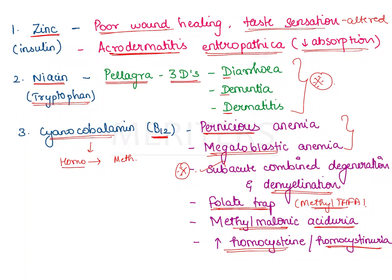Additionally, methylmalonyl-CoA accumulates and gets excreted in the urine — methylmalonic aciduria — because its conversion to succinyl-CoA does not occur in B12 deficiency. Increased homocysteine levels or homocystinuria are also seen, since B12 is essential for converting homocysteine into methionine. If B12 is deficient, homocysteine accumulates in the blood and is excreted in the urine.